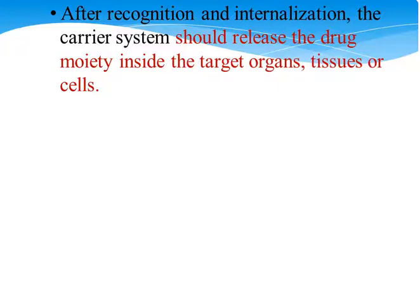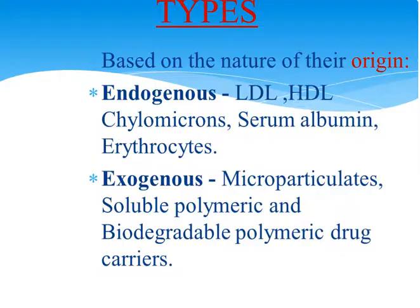After recognition and internalization, the carrier system should release the drug or moiety inside the target organs, tissues or cells. Based upon the nature of origin, the carriers are divided into two groups: endogenous carriers and exogenous carriers. Endogenous carriers are those found inside our body like low-density lipoproteins, high-density lipoproteins, chylomicrons, serum albumin and erythrocytes.